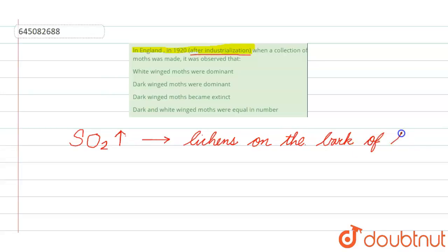...were removed due to the pollution. Lichens are very good indicators of pollution, so as these were removed, the dark color of the bark was exposed, due to which the dark-colored...